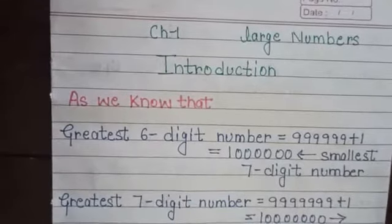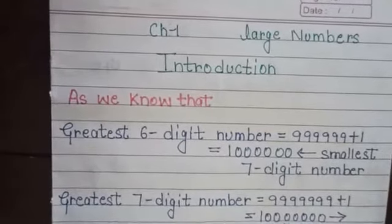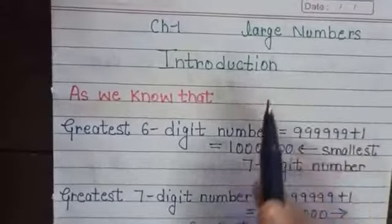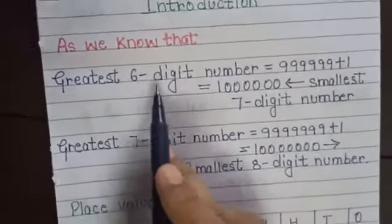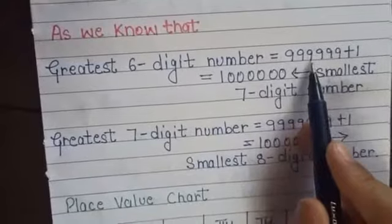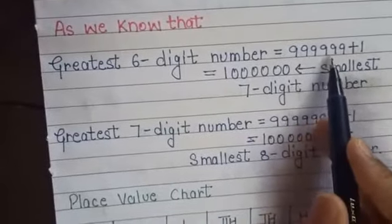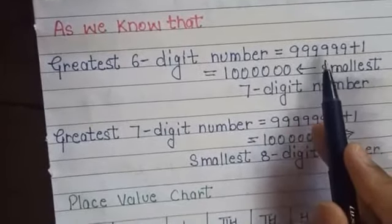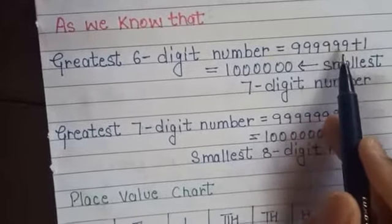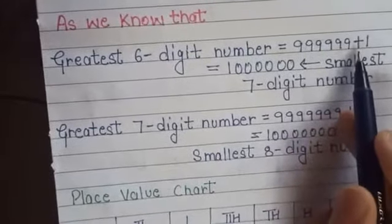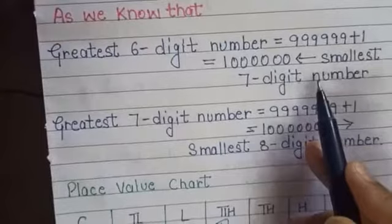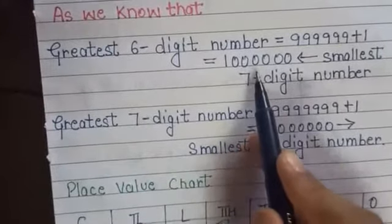Hello students, now we are doing introduction of chapter 1, large numbers. As we know, the greatest 6-digit number is 9,99,999 — 9 appears 6 times. If we add 1, then we get the smallest 7-digit number, which is 10,00,000.